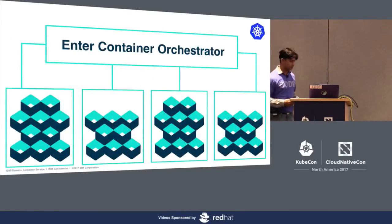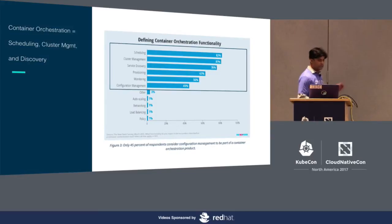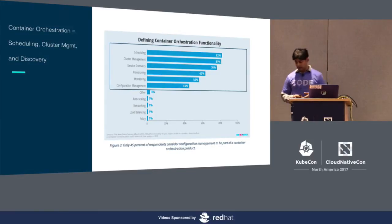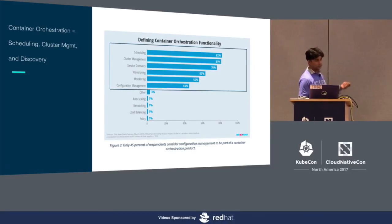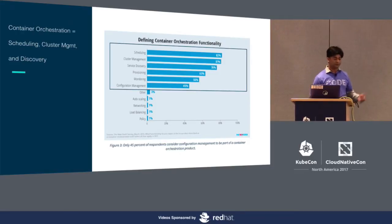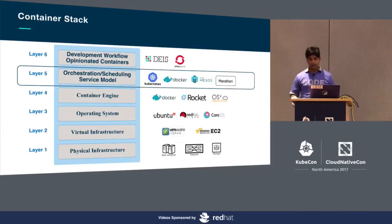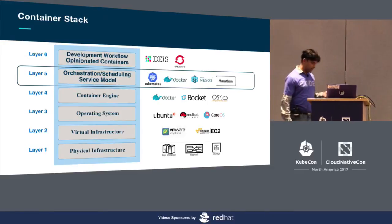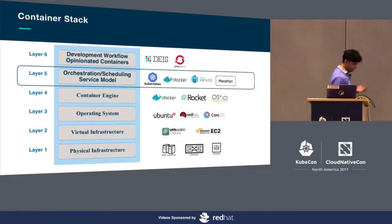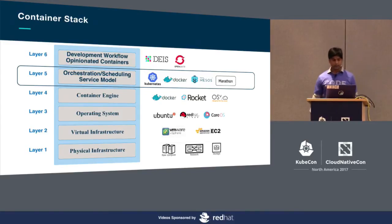Enter container orchestrator. If you look at a survey done last year where we asked respondents what they are expecting most from a container orchestrator, scheduling, cluster management, and discovery were the top three functionalities identified. Popular container orchestrators like Kubernetes, Swarm, and Mesos sit at layer 5 of the container stack.